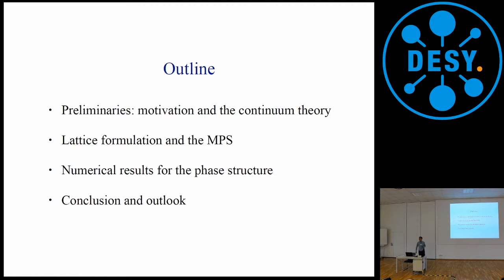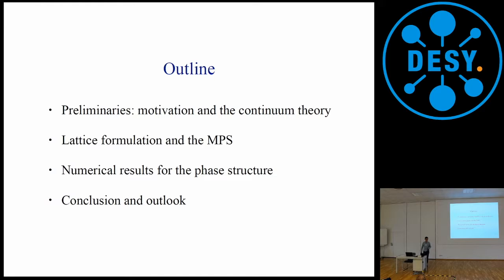So in this work, I will briefly give you the motivation of why I, as a lattice field theorist, would be motivated to jump into this field of tensor networks. I will briefly remind you what the Thirring model is all about and why it's interesting to study. Then I will give you the latest formulation that we're using and how to write it as a matrix product state. I'll present the numerical results from our study of the phase structure of the two-dimensional Thirring model, and then conclude with directions for future work.